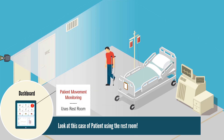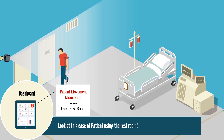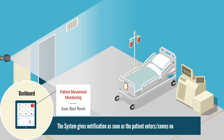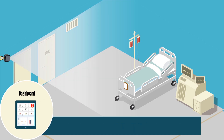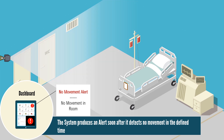Now, let us look at this case of a patient using the restroom. As soon as he gets up from the bed, a notification will pop up in the dashboard, and when he enters the restroom, an alert is given. In case the patient does not return from the restroom in a defined time, the system gives an emergency alarm. These real-time alerts help the medical team to be on top of the situation and act quickly in case of any unusual events.